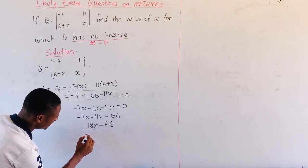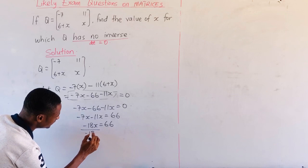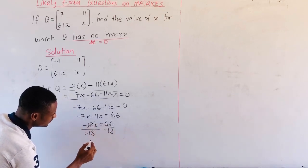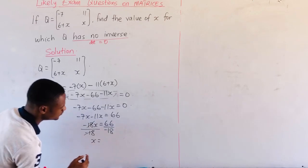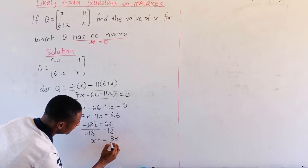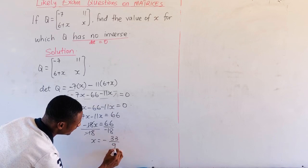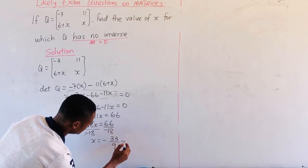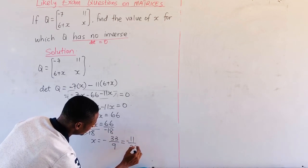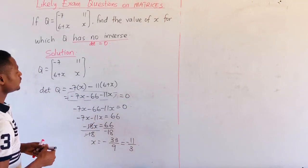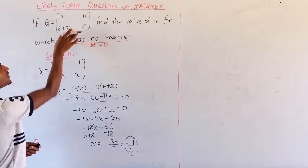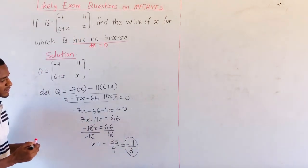Dividing through by negative 18, our x is equal to negative 33 over 9, which simplifies to negative 11 over 3. And so this is the value of x for which matrix K has no inverse.